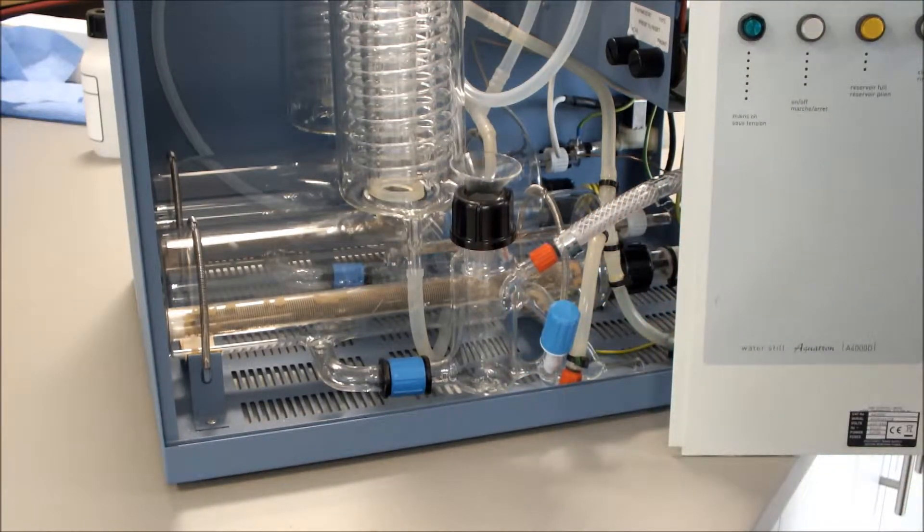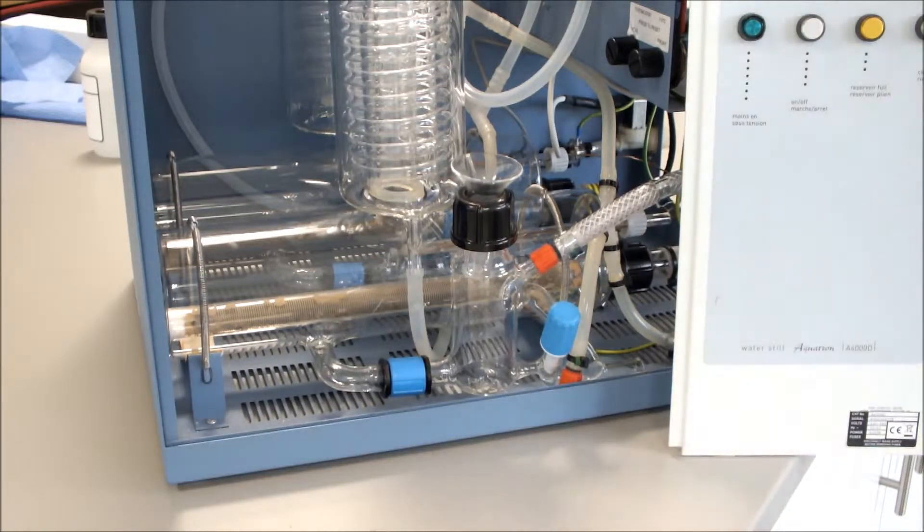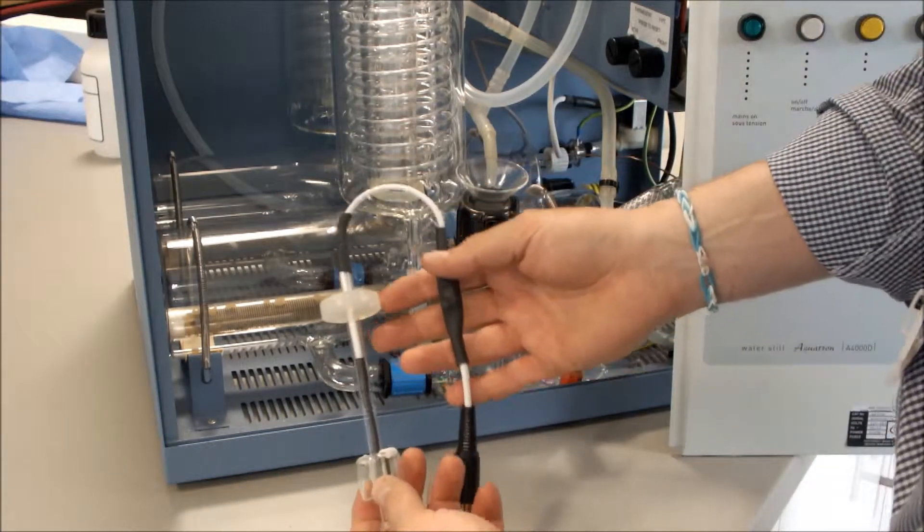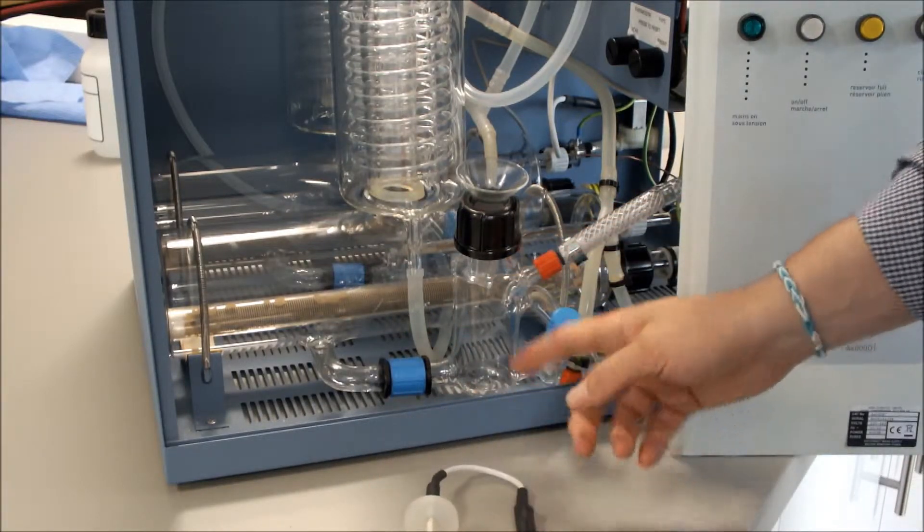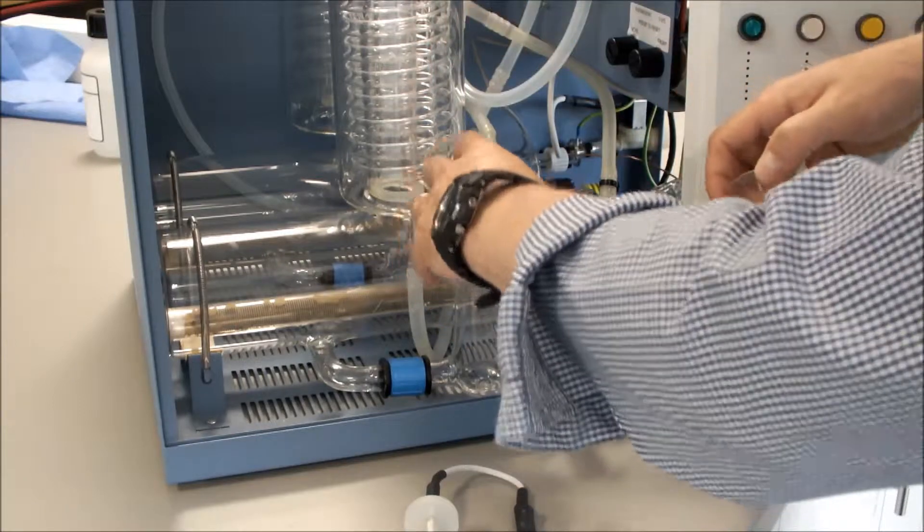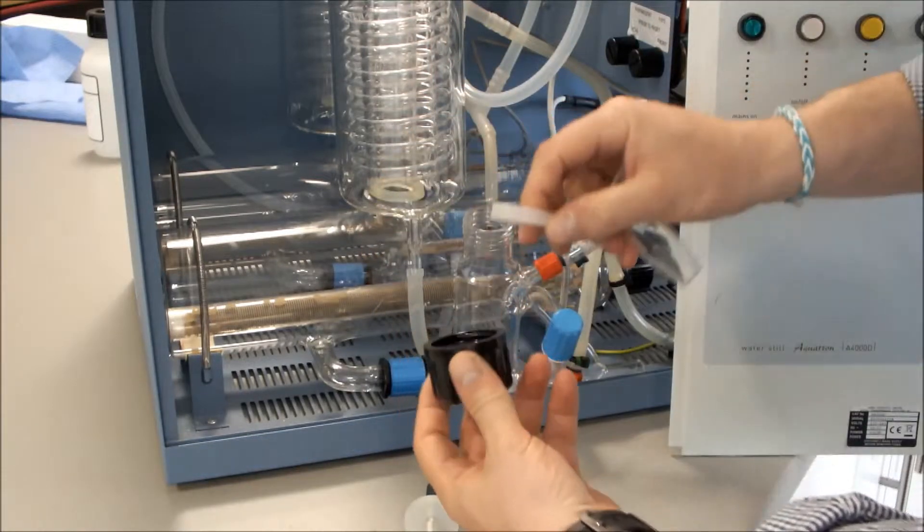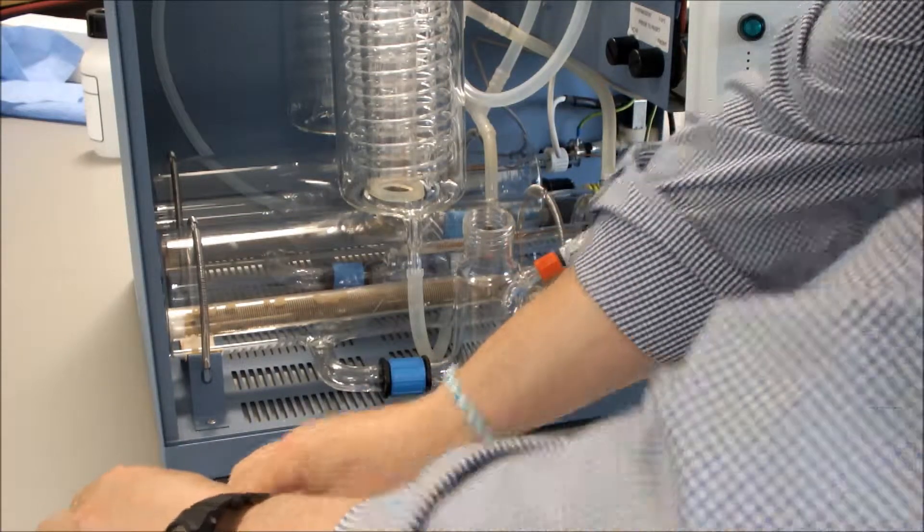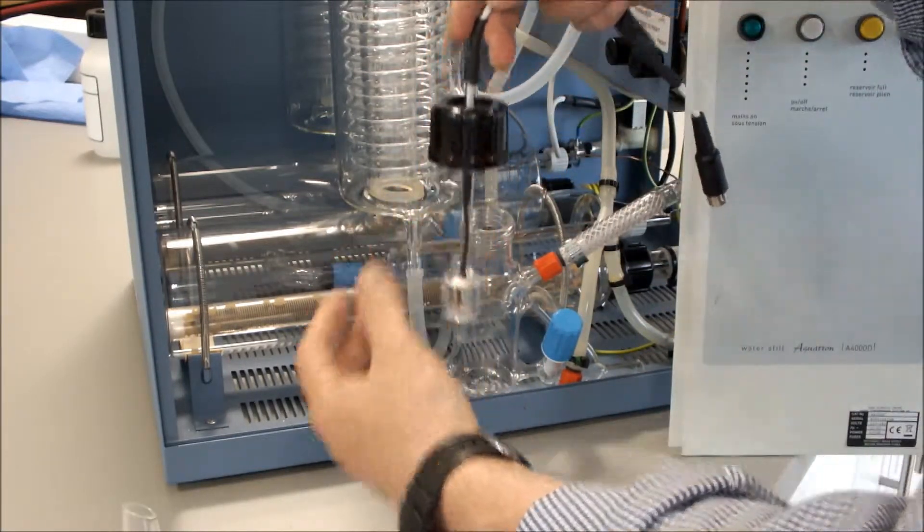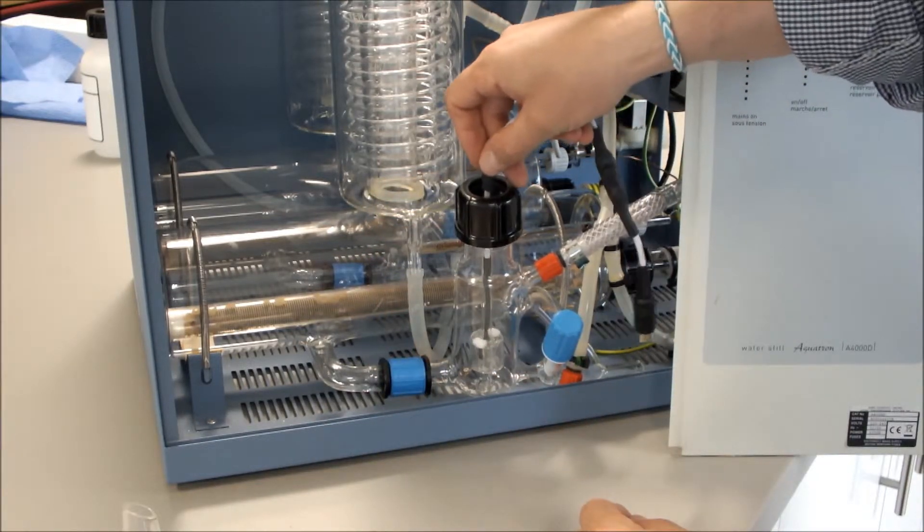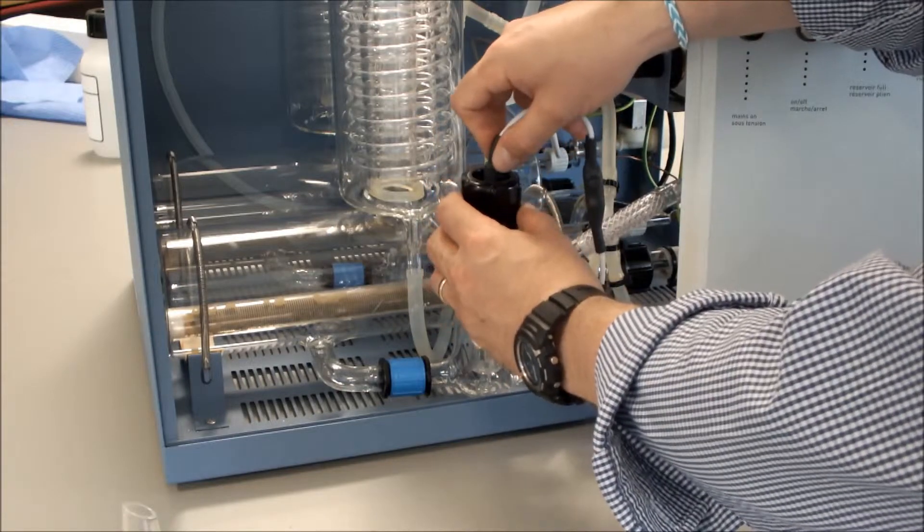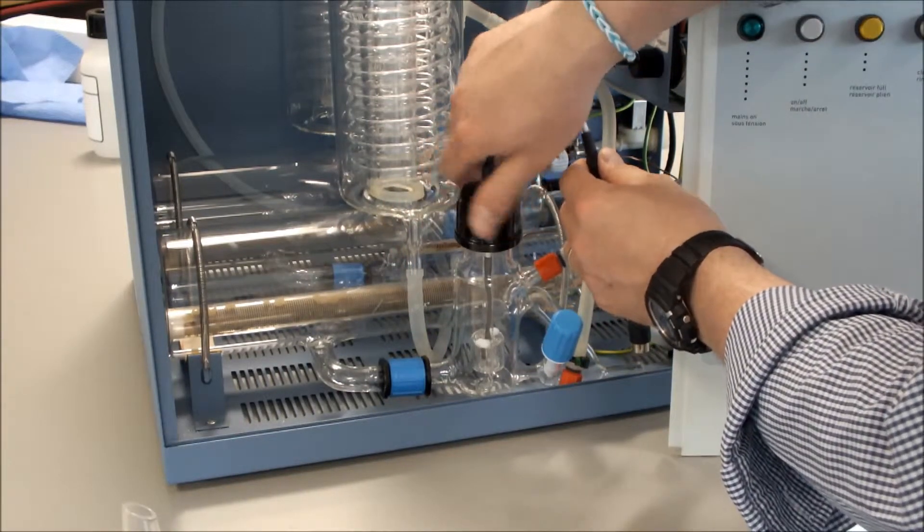We'll now fit our float level assembly to our boiler level control. First, we undo the black cap, remove the funnel, remove the black cap and the seal. We then fit the black cap onto our float assembly, which comes complete with seal. The float assembly fits like so. At the bottom of the boiler control, there's a cutout. That is where the bottom of the float assembly actually fits. We can then tighten up the black cap.